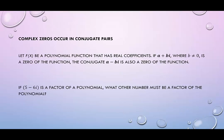The first thing to know about complex zeros in polynomial functions is that they always occur in conjugate pairs. So what does this mean? That means if we have a polynomial function f(x) and it has real coefficients, that if a + bi, where b does not equal zero, is a zero of the function,